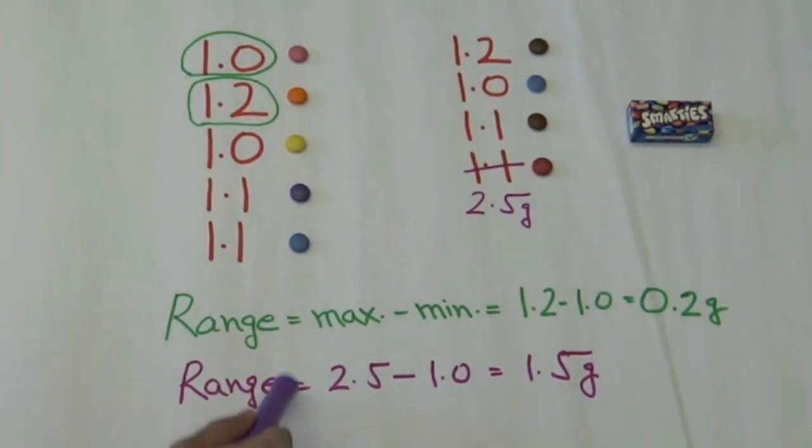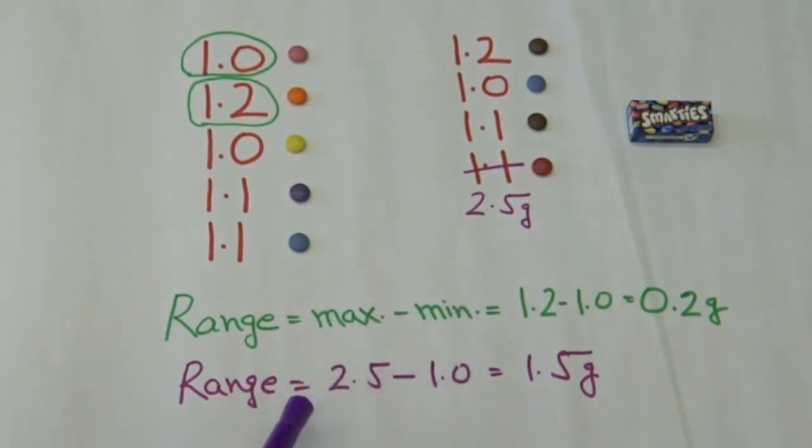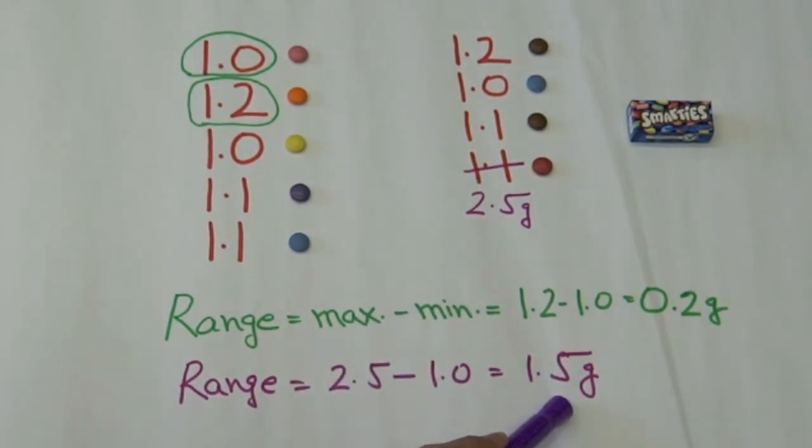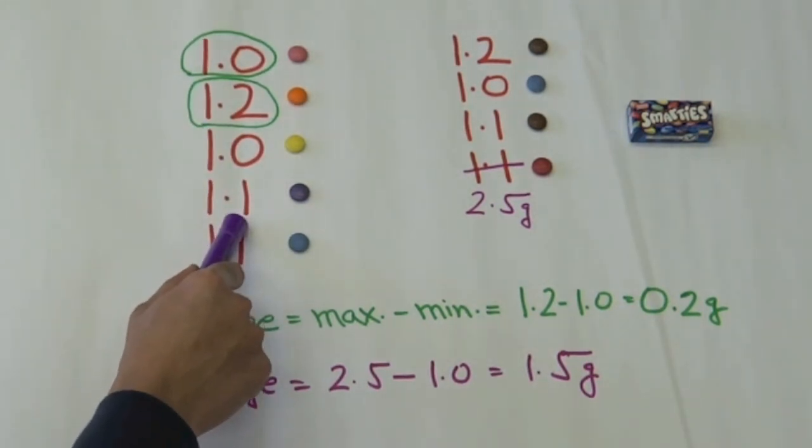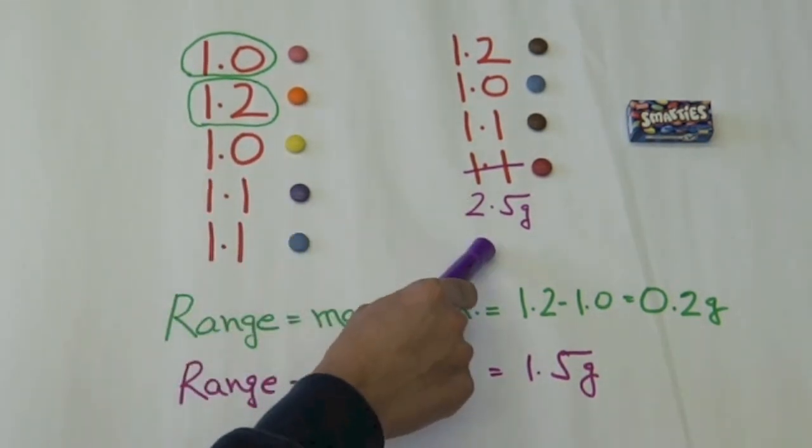So this tells us that the weight of the smarties vary by a range of 1.5 grams, but it fails to tell us that most smarties here weigh around 1 gram and not 2.5 grams.